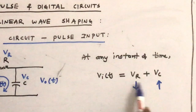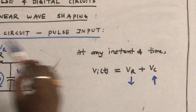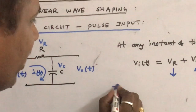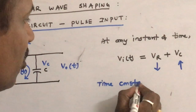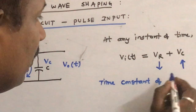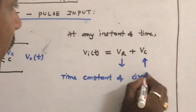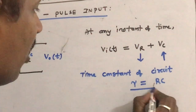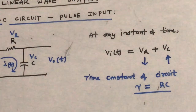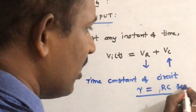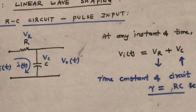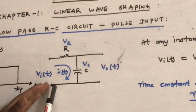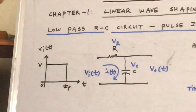The sum of these two voltages is always equal to the input voltage. The time constant of the RC circuit is tau equals RC. The time constant formula is R into C, and since it is a time constant, the unit is seconds. Now let us see, at different instances of time, what will be the capacitor voltage.